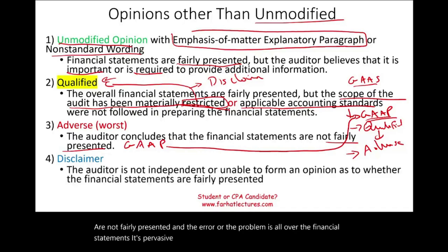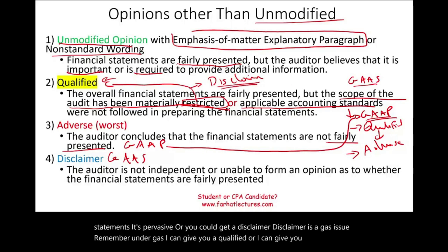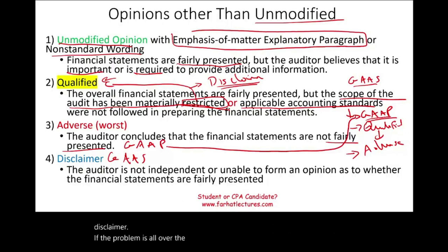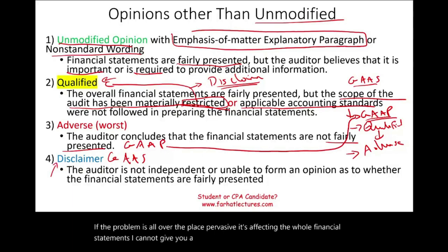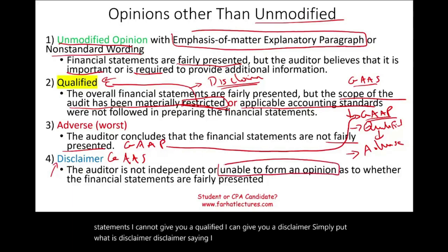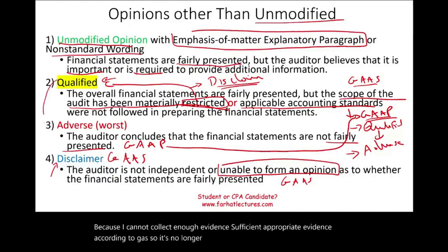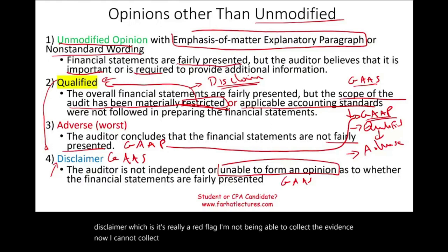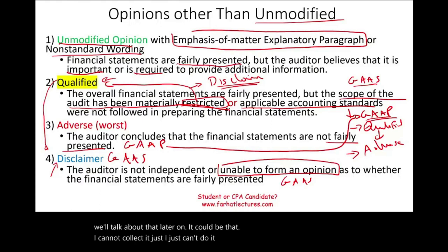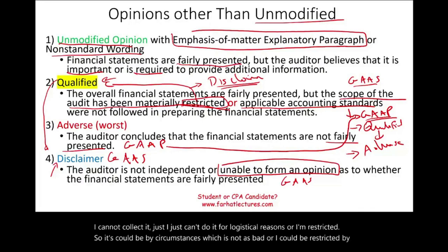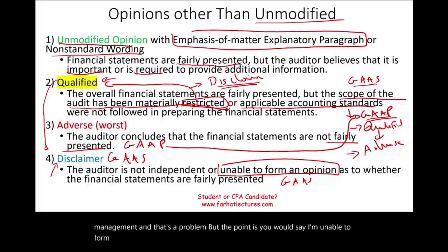Or you could give a disclaimer of opinion, which is a GAAS issue. Under GAAS, when the scope restriction is pervasive and affects the entire financial statements, you cannot give a qualified opinion — you give a disclaimer. A disclaimer means you are unable to form an opinion because you cannot collect sufficient appropriate evidence. This could be due to circumstances or logistical reasons, or you could be restricted by management, which is more serious. In either case, you state that you are unable to form an opinion.